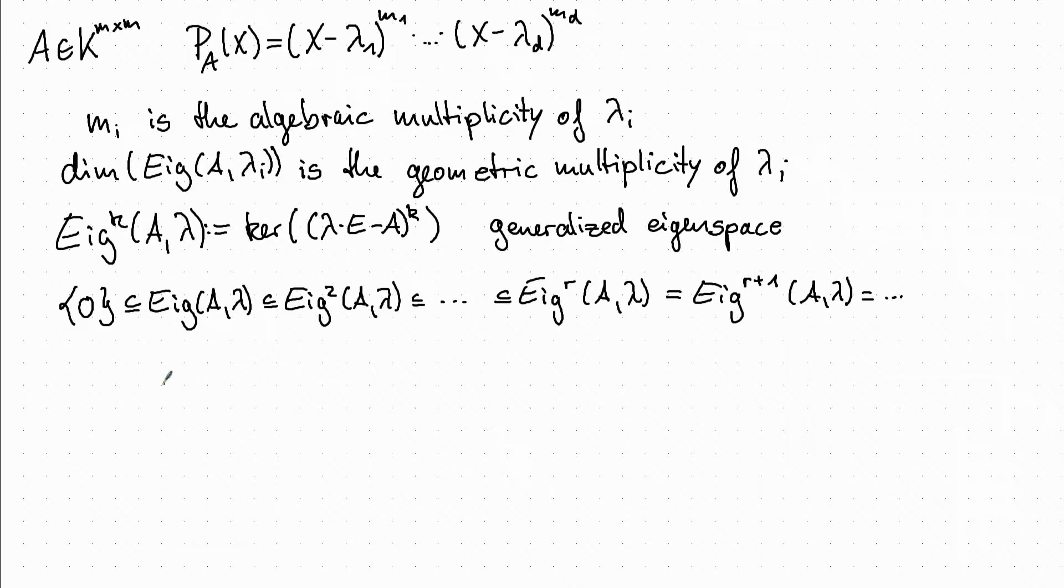We have two nice properties of this r and the eigenspace. First we have that r_i, where r_i is just this r belonging to the eigenvalue lambda_i, is smaller or equal to the dimension of the r_i-th eigenspace.